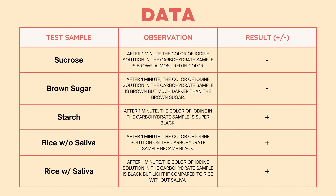Starch: after 1 minute, the color of iodine solution in the carbohydrate sample is super black, which results in a positive presence of carbohydrates. Rice without saliva: after 1 minute, the color of iodine solution became black, which concludes that there is a presence of carbohydrates in the test sample.